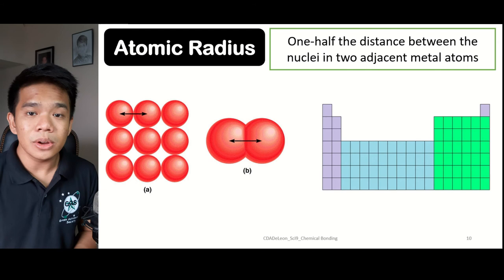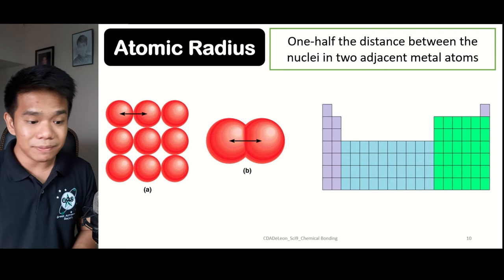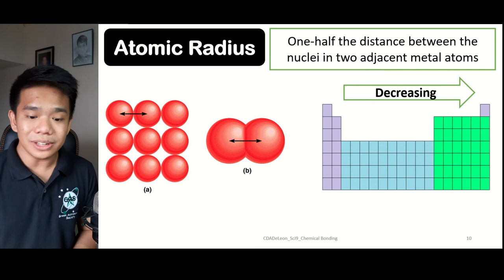Let us first have the atomic radius. The atomic radius refers to half of the distance between the nuclei of two adjacent atoms. When we go from left to right, the atomic radius tends to decrease. Meanwhile, it tends to increase when we go from top to bottom.